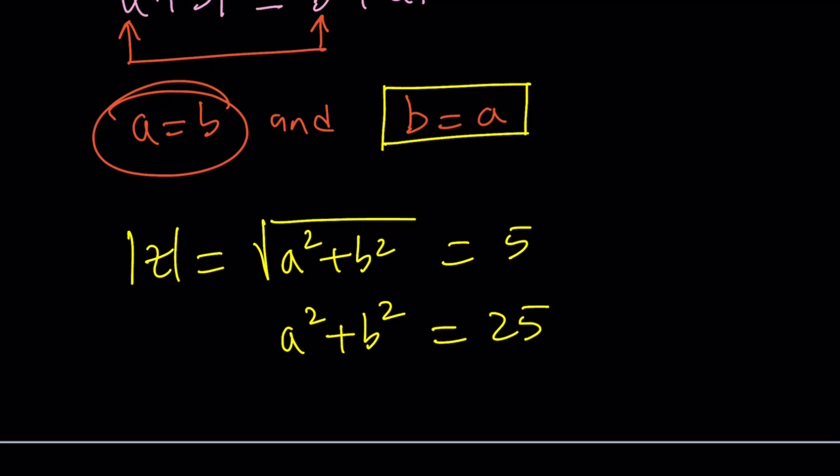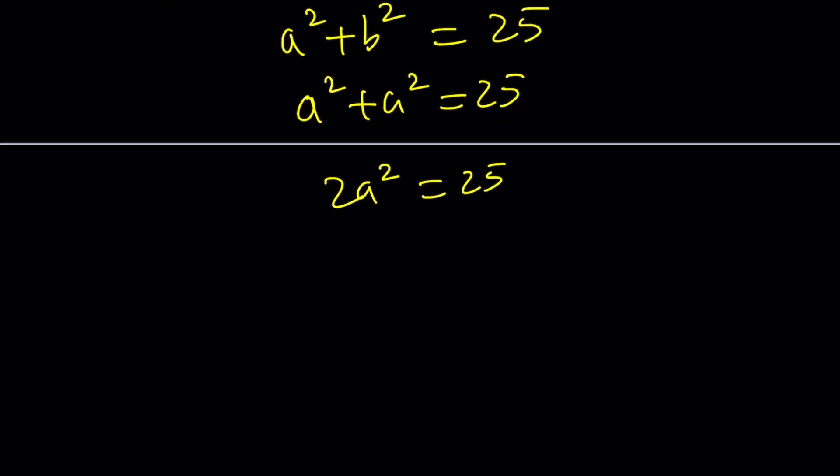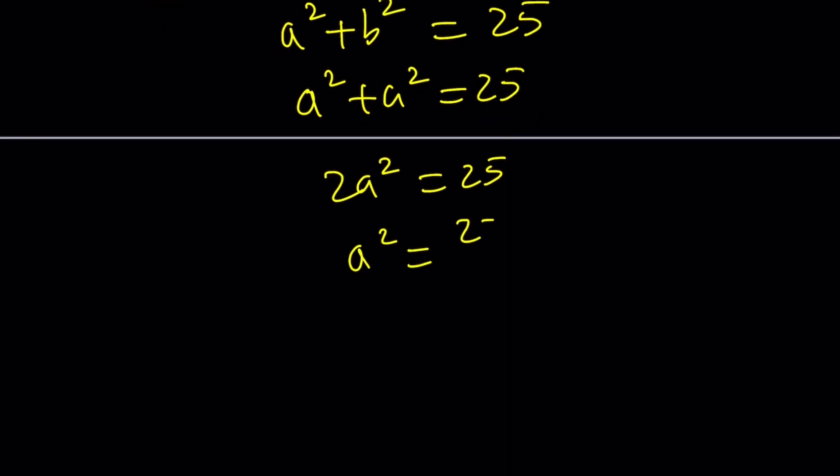Now I can replace b with a because b equals a. That gives me a squared plus a squared equals 25, which means 2a squared equals 25, which means a squared equals 25 divided by 2.